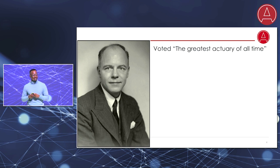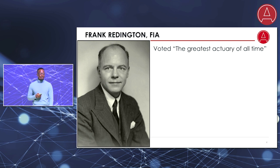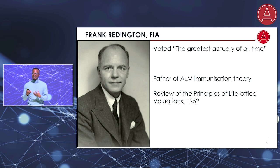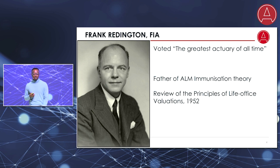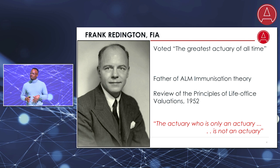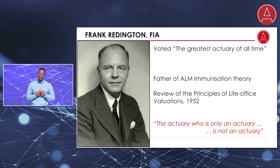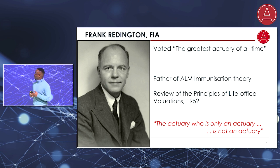His name is Frank Reddington. In the UK, he was so revered that they voted him the greatest actuary of all time. In his paper in 1952, he laid the initial foundations for an ALM solution for interest rate hedging. He said that the actuary who's only an actuary is not an actuary. He wanted actuaries to work closely with other professionals to make an impact in broader society and to borrow techniques from them. This was my motivation for dedicating the past two years of my life to diving into the world of computer science to learn how we can bring something new to our community.